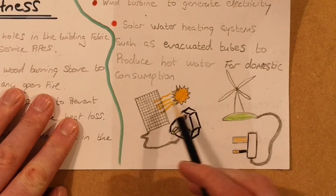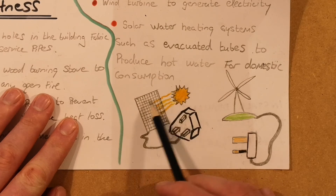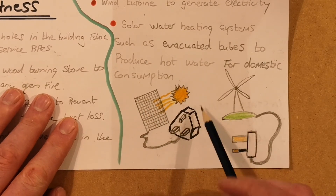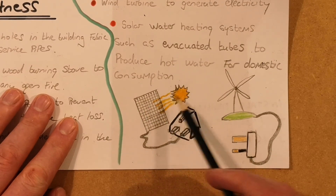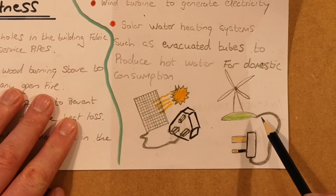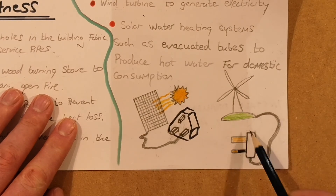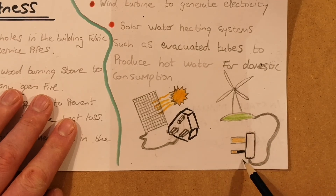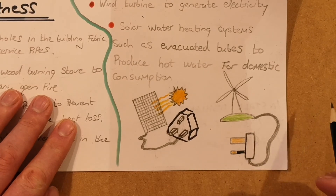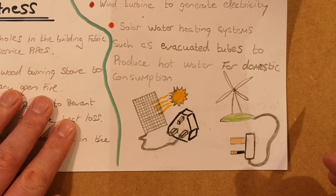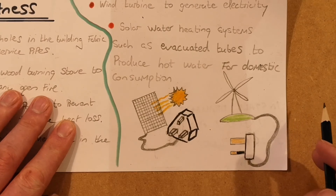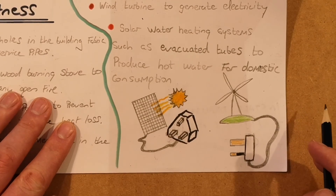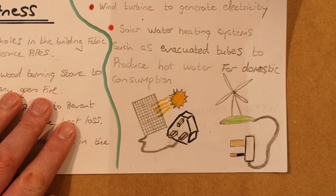For the exam sketches: a very simple one shows the sun hitting a solar panel connected to a plug, showing it generates electricity. The exact same approach works for a wind turbine — a wind turbine with a cord into a plug. Two simple sketches that would look well in an exam. Those are the final three headings on the retrofit mind map.